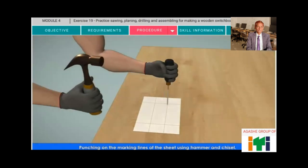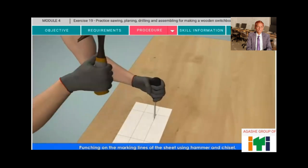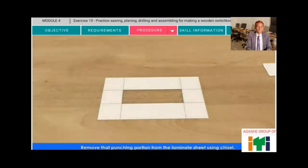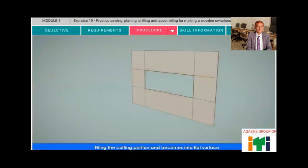Punching on the marking lines of the sheet using hammer and chisel. Remove that punching portion from the laminate sheet using chisel. Filing the cutting portion and pickups into flat surface.